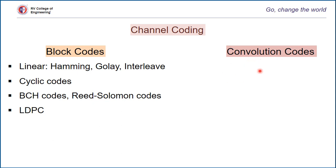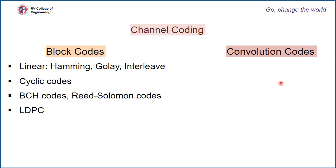Convolution codes are one of the most widely used channel codes in practical communication systems. These codes are developed with a strong mathematical structure and are primarily used for real-time error correction. Unlike block codes, convolution codes convert the entire data into one single codeword. The encoded bits depend not only on the current k input bits but also on past input bits — hence, since it has memory, it is unlike block codes.